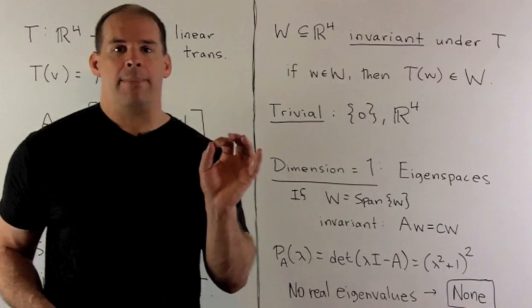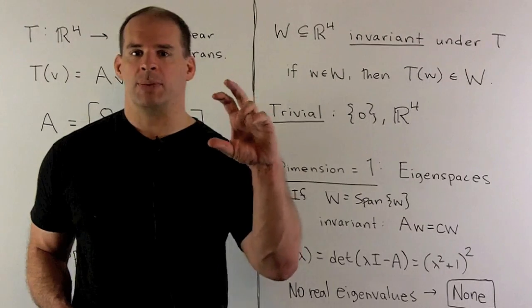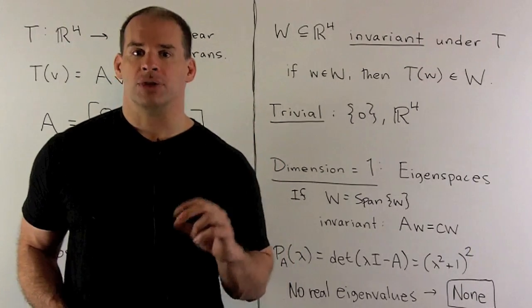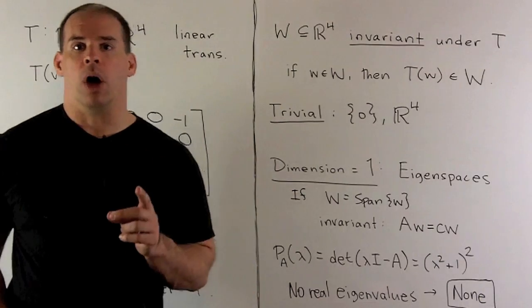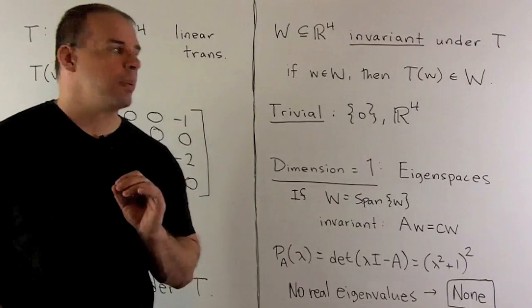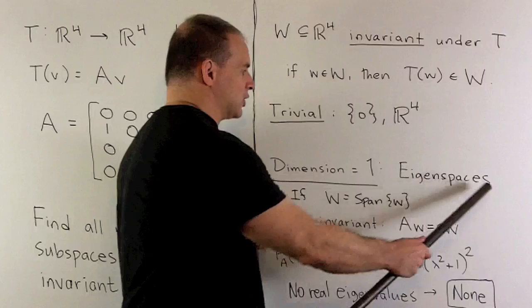By trivial, I mean the subspace 0 and R⁴. We're always going to have those as invariant subspaces. That means we're looking for subspaces in between these two. So, they'll have dimensions 1, 2, or 3.